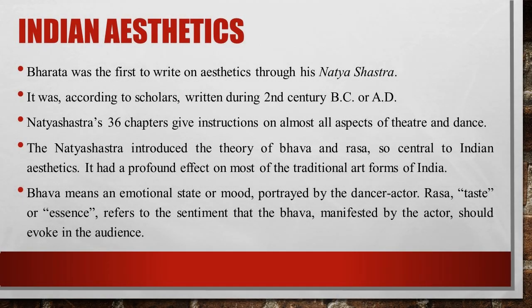Indian aesthetics is earlier than Western aesthetics. Bharata was the first to write on aesthetics through his Natya Shastra. It was written mainly in terms of literature, drama and dance. Natya Shastra, according to scholars, was written during the 2nd century BC or AD. The 36 chapters in Natya Shastra give instructions on almost all aspects of theatre and dance — the theatre building, the stage, the theory of poetry, the use of voice, makeup, costume, acting styles, dance techniques, and even theatre criticism. The Natya Shastra introduced the theory of Bhava and Rasa, which are so central to Indian aesthetics, and had a profound effect on most of the traditional art forms of India.